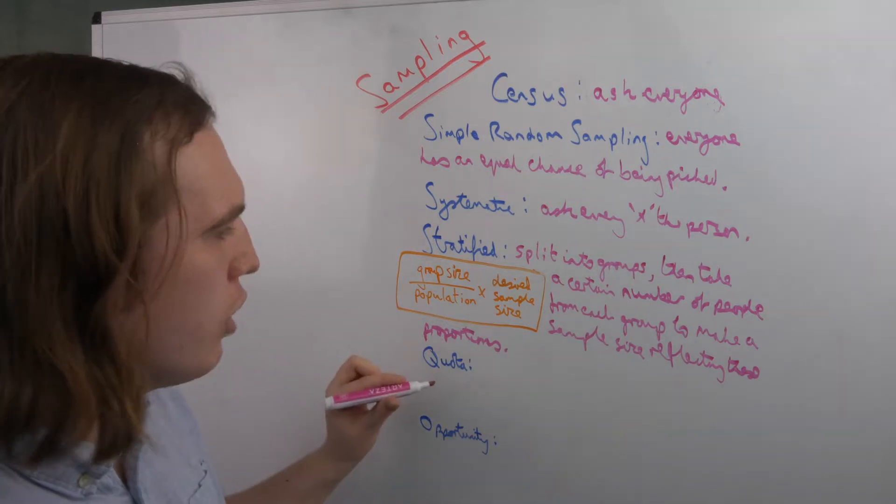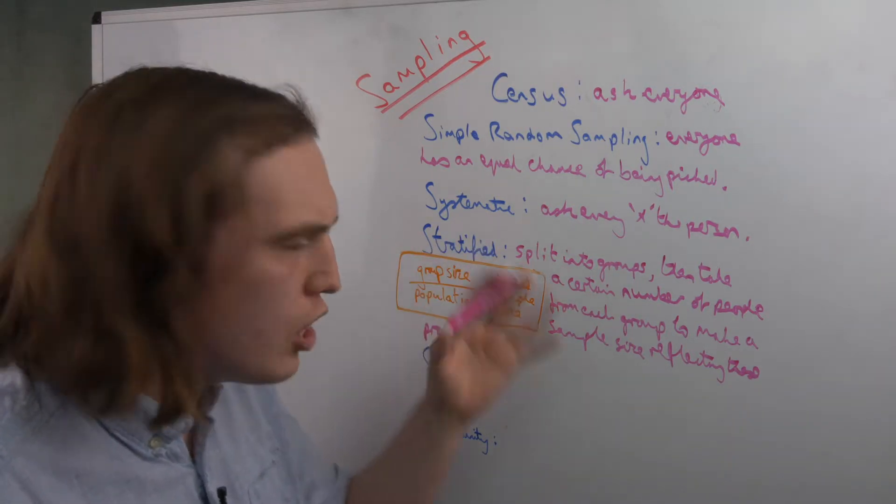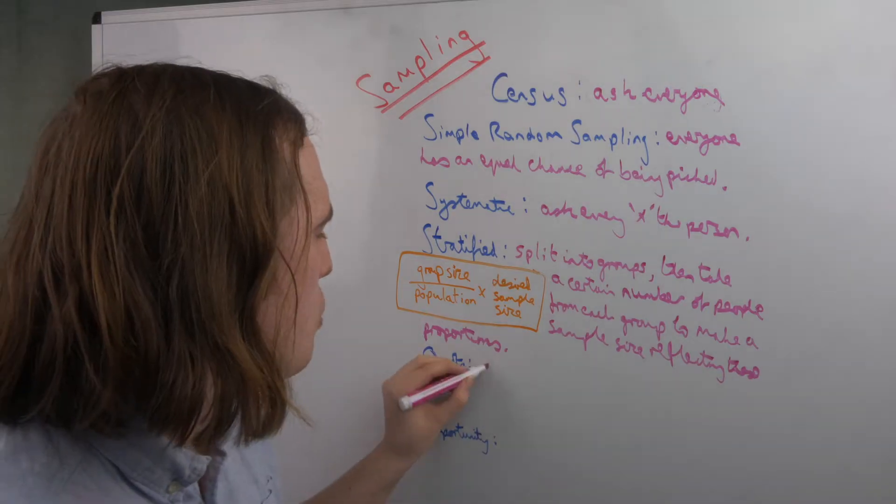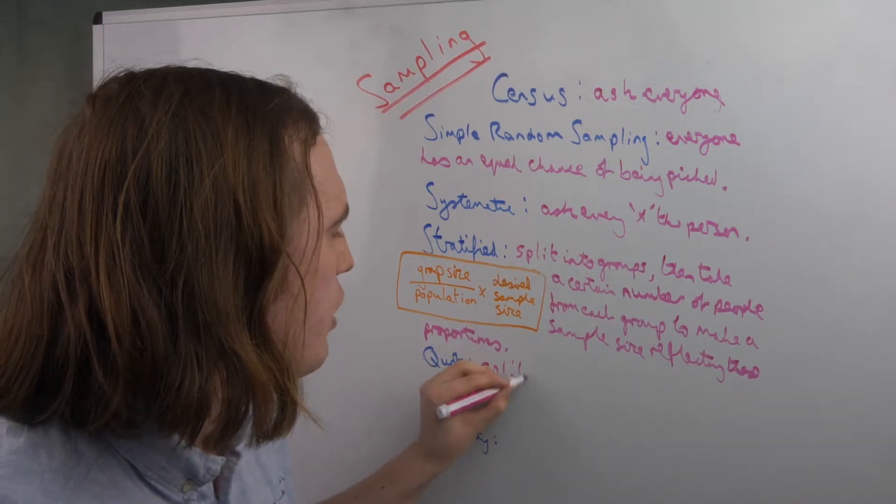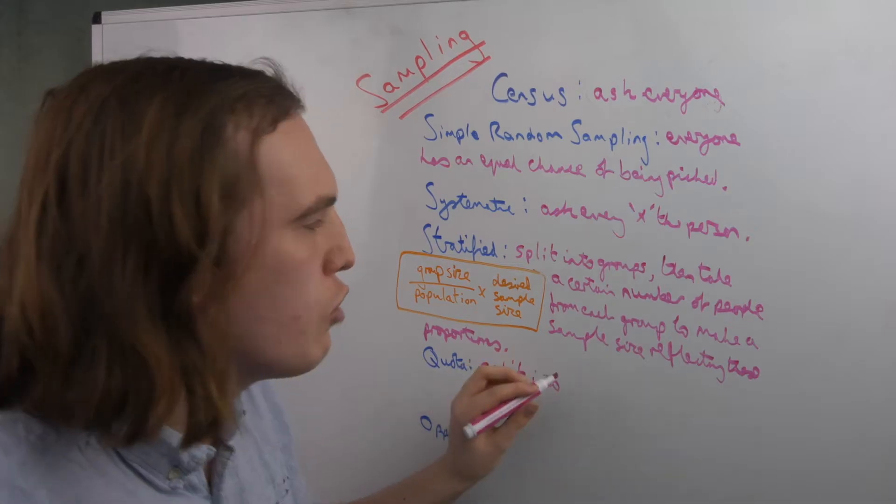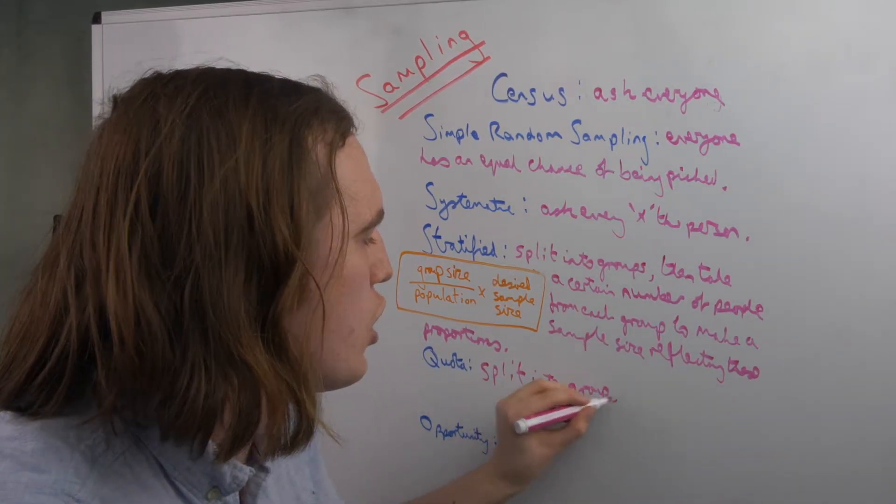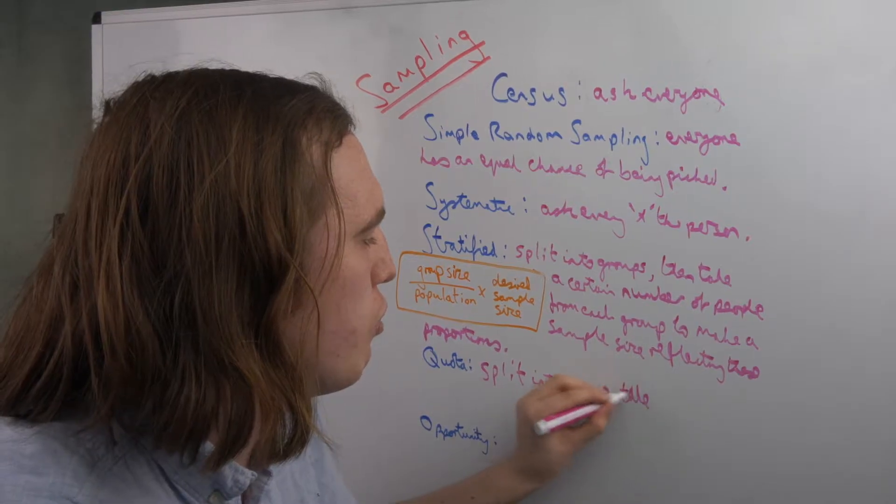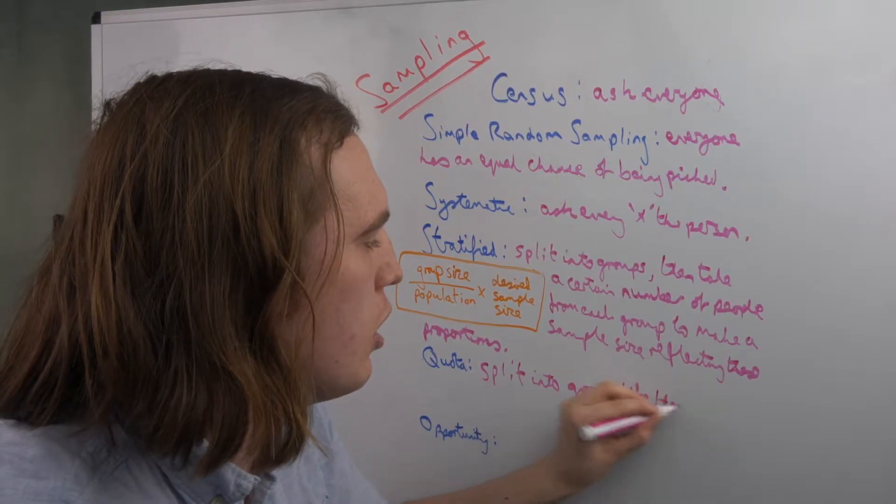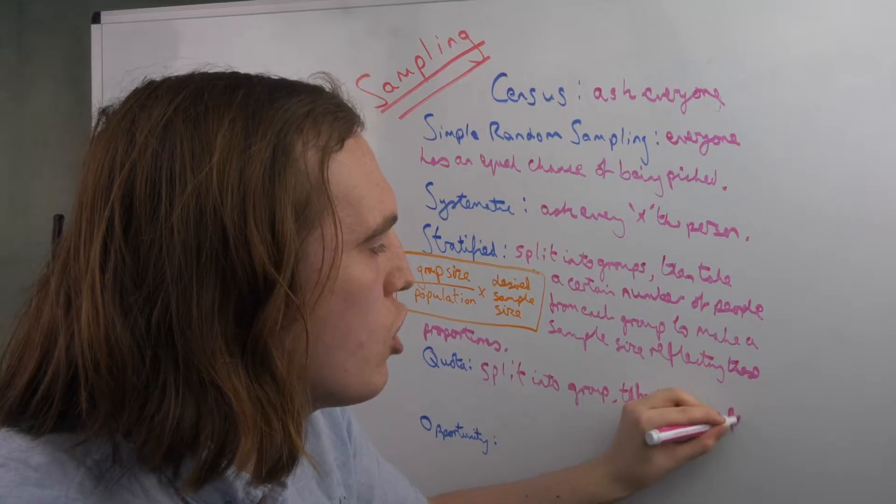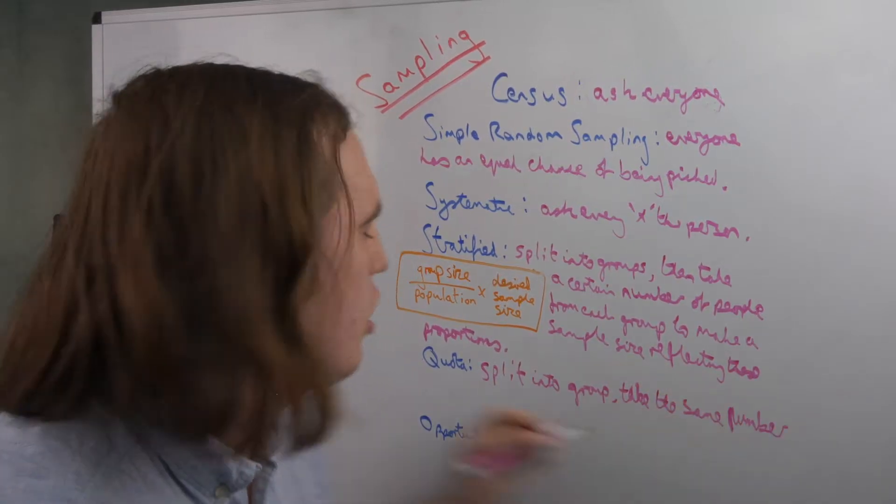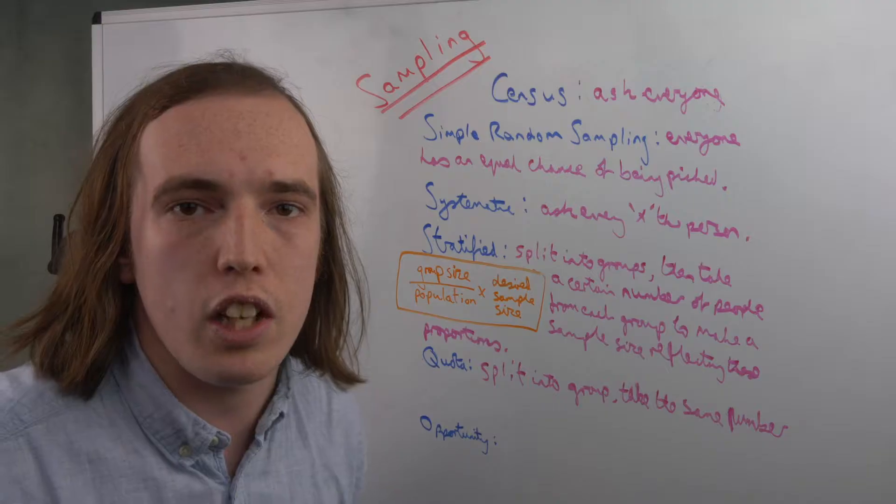For quota, it's going to start off similar. Again, you're going to split into groups. However now, instead of trying to keep the proportions the same, you're going to take the same number from each group, so that you have equal representation.